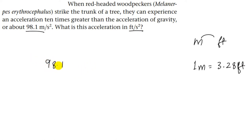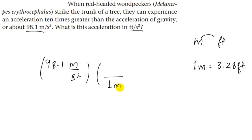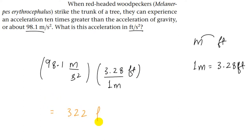So 98.1 meters per second squared — we have to convert this meter into feet. One meter equals 3.28 feet, so this meter and meter cancel out and we get the answer in feet per second squared. That would be nearly 322 feet per second squared. So this is the solution.